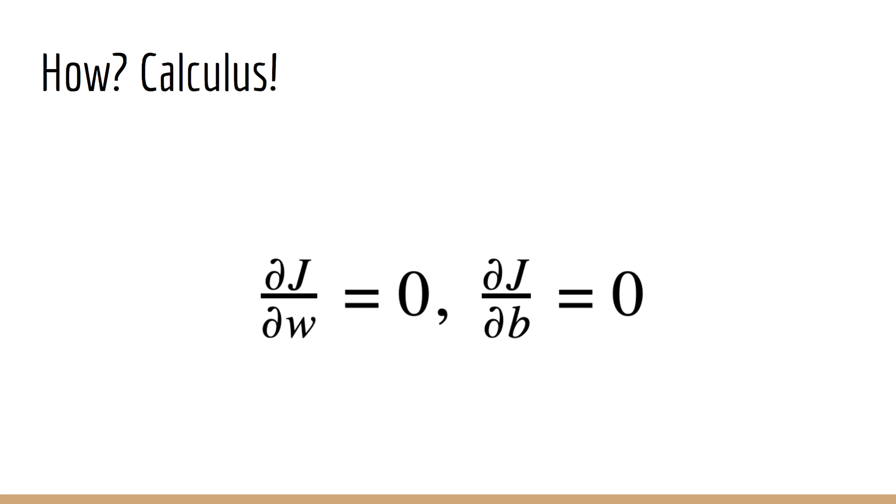So how do we do step two? If you recall it's just basic calculus. We find the derivative of our loss with respect to w and b, set them equal to zero, and then solve for w and b.